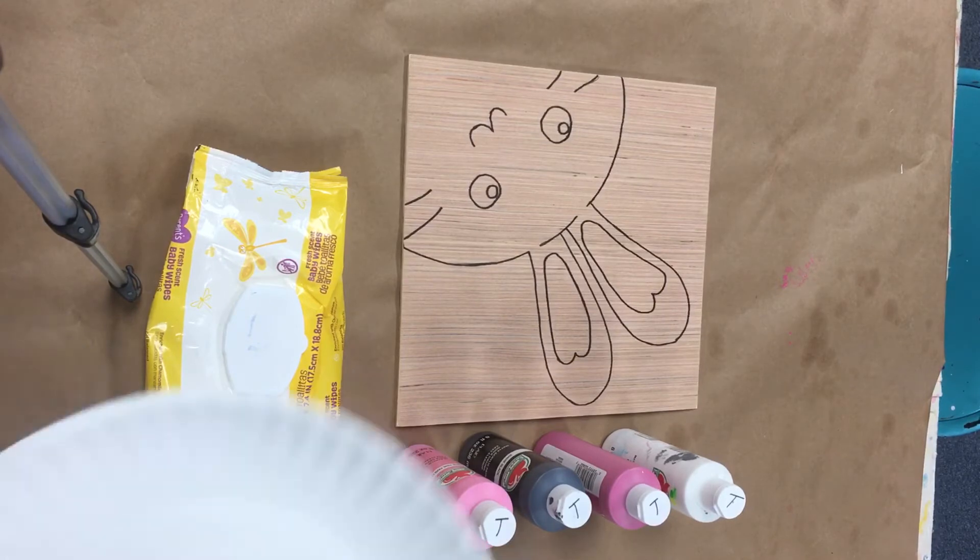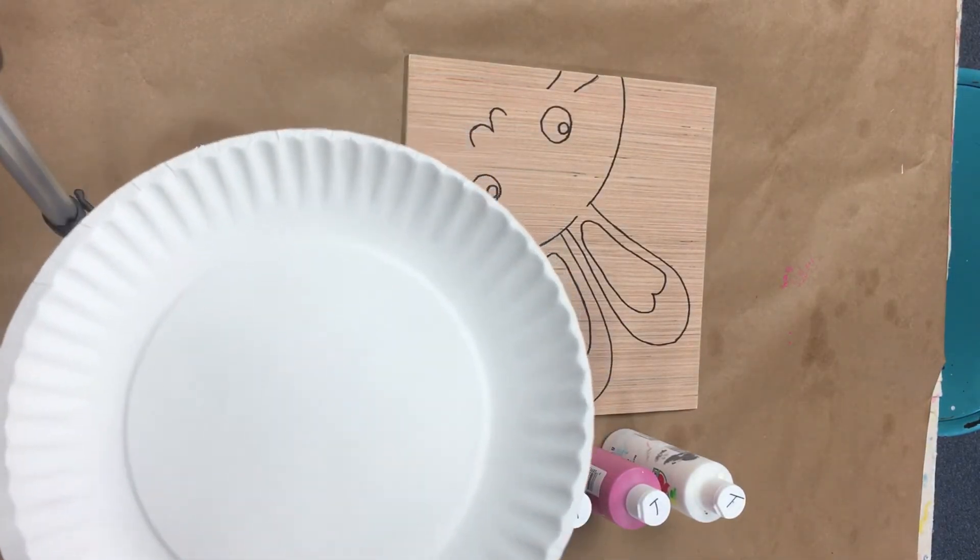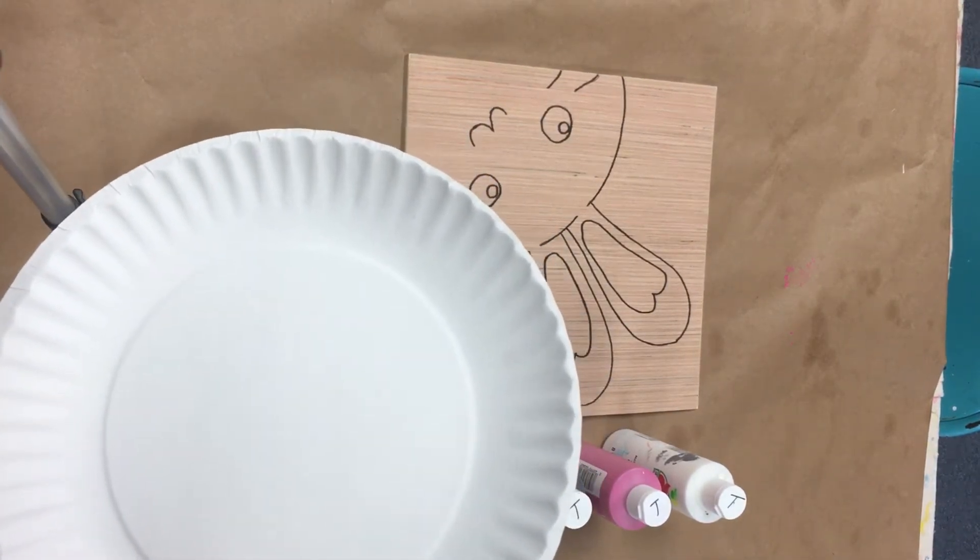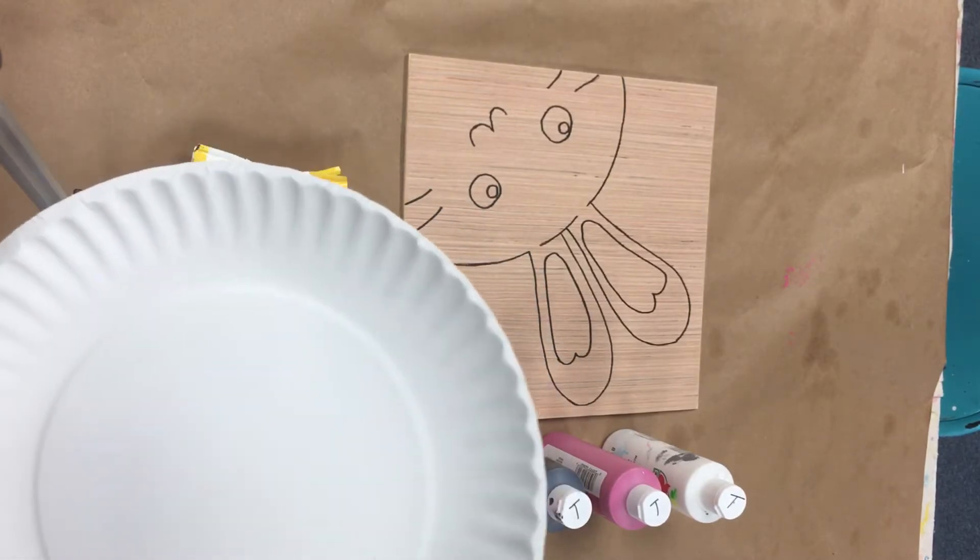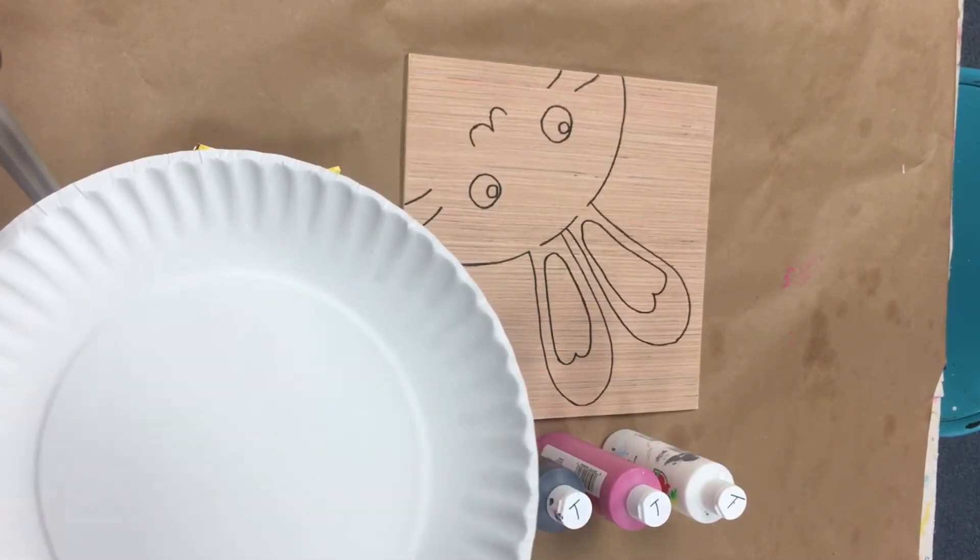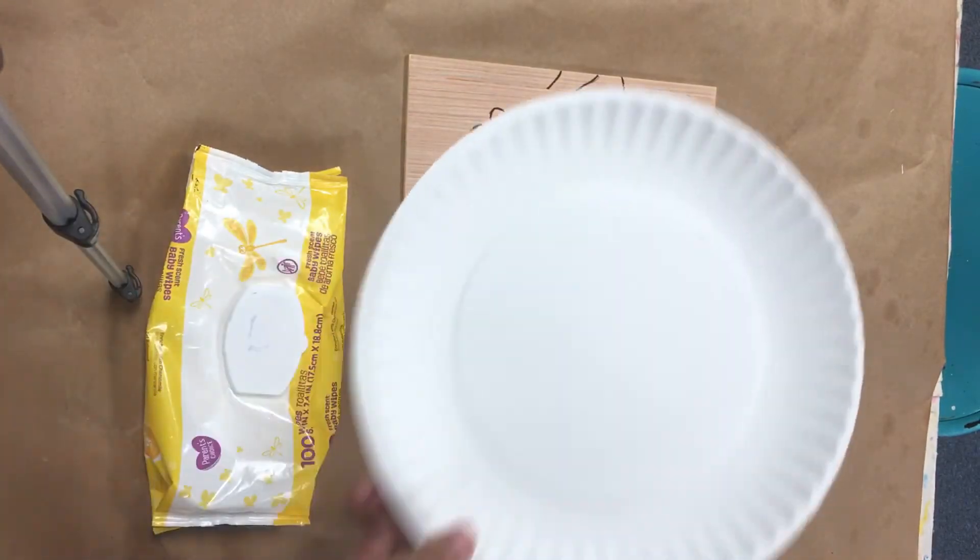If you don't have paper plates at your house, you can use tin foil. And if you don't have tin foil or a paper plate, grab a regular plate, just remember you have to wash it right away to get all that paint off before it dries.